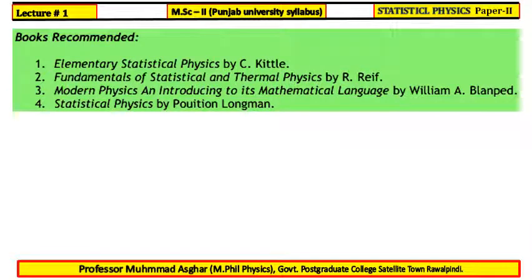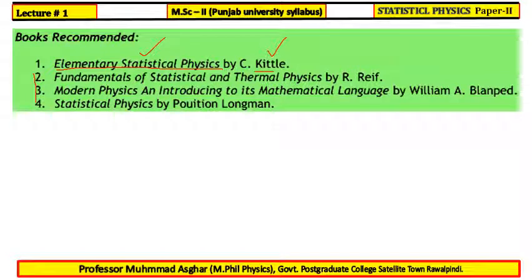There are four recommended books for Statistical Physics Paper 2 according to Punjab University syllabus. The first is Elementary Statistical Physics by C. Kittel. We will follow this book primarily, because different books use different symbols, and we will consistently use the symbols from Elementary Statistical Physics by C. Kittel.